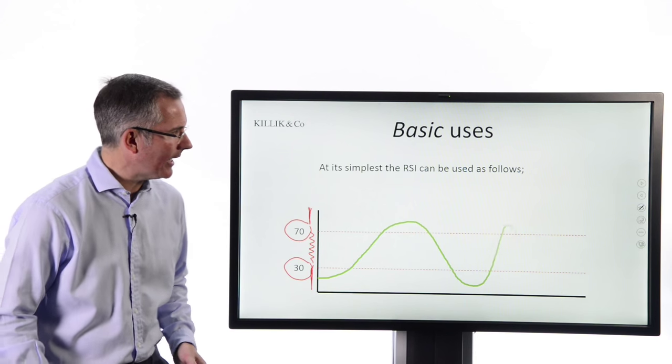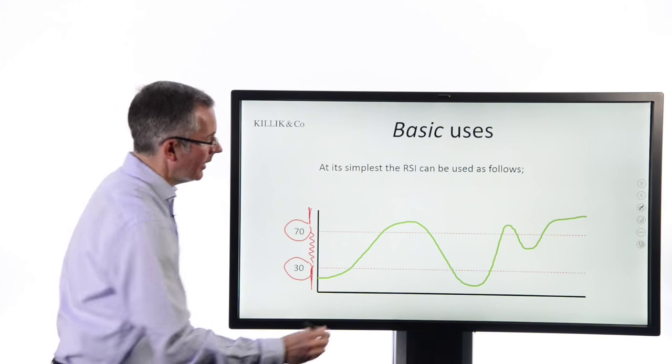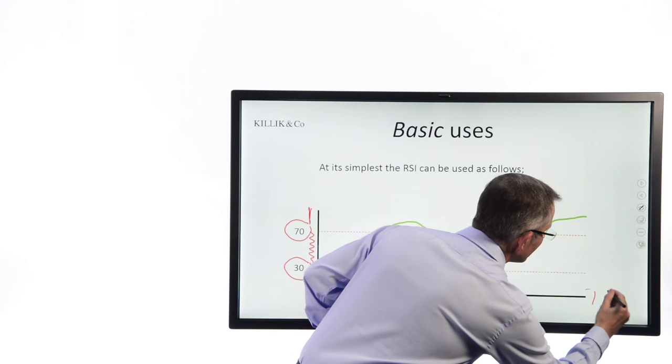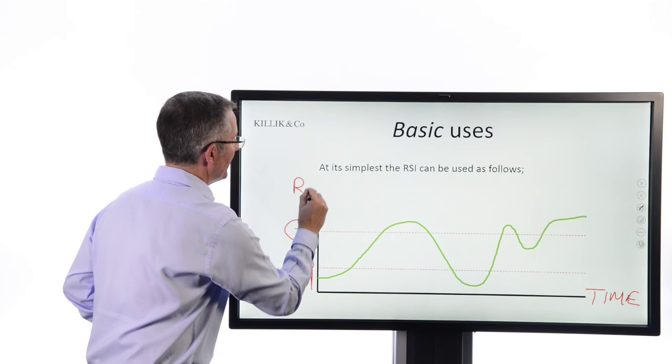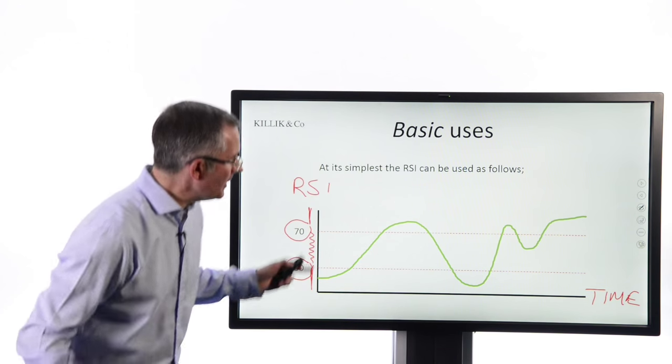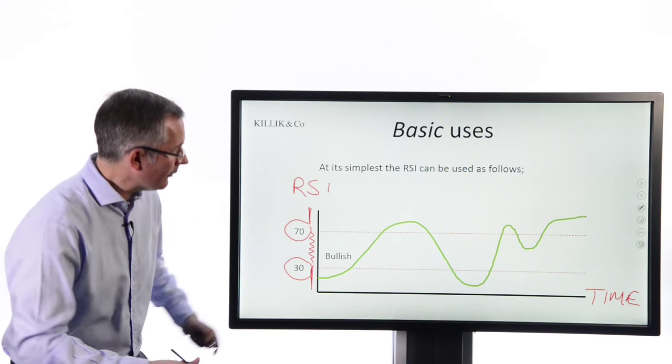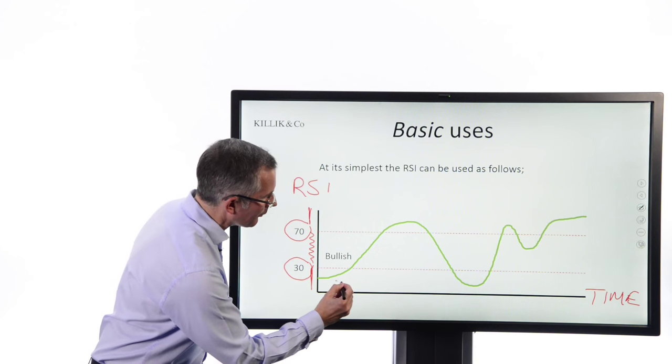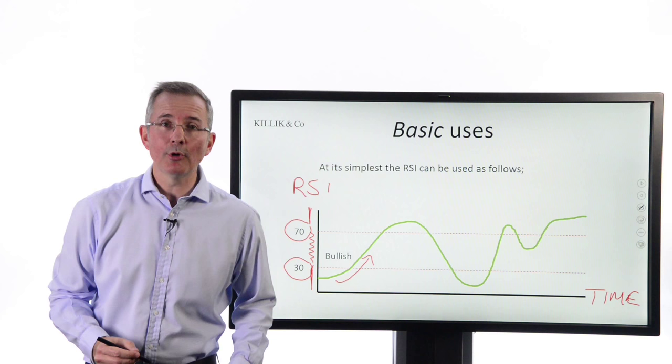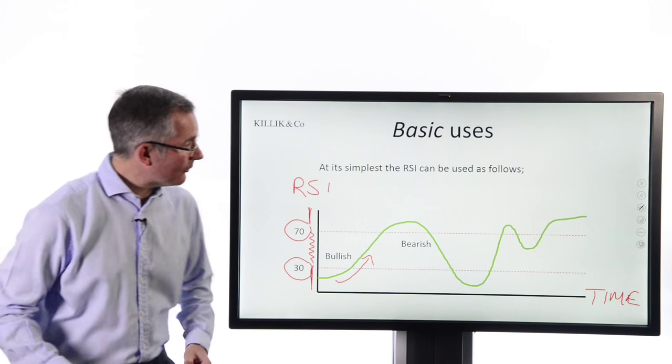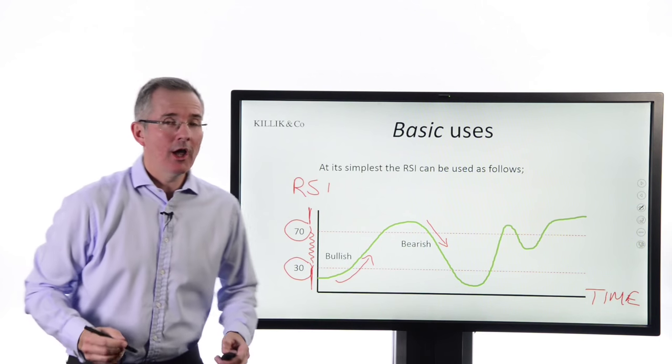Let's say the RSI looks like that. So you're plotting the RSI over time. So there's time. And there's the level of the RSI. What would you interpret as it begins to move around? And how would you react as an investor? Well, in essence, when the RSI cuts up through 30, comes off its low, if you like, that's seen as bullish. Equally, when it cuts down through 70, that's seen as bearish.